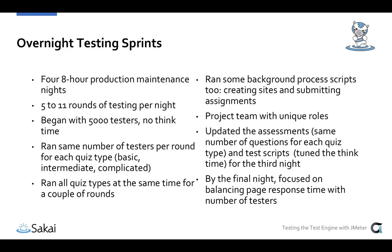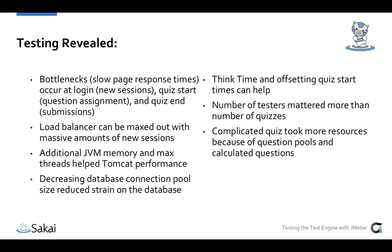By the final night, we were focused on balancing page response time with the number of testers, figuring out the ideal number for different quiz question types. The testing revealed three major bottlenecks: first at login, when new sessions were hitting the load balancer and creating new sessions in OWL; second at quiz start time, when all questions are generated — especially for the complicated scenario with calculated questions and question pools; and third at the end when everybody was submitting simultaneously.